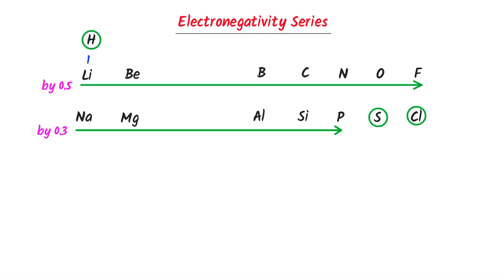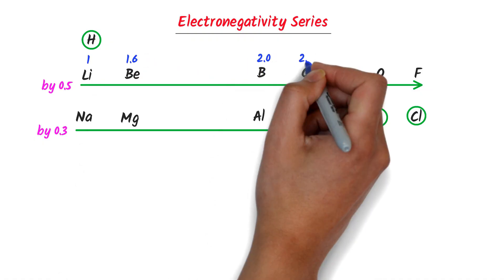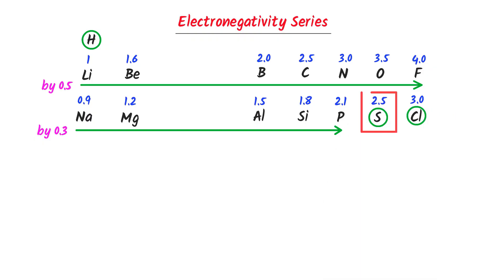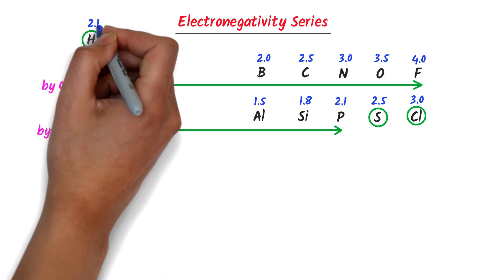So the second period values are: 1.6, 2.0, 2.5, 3.0, 3.5, and 4.0. For the third period, I write 0.9, then increase by 0.3: 1.2, 1.5, 1.8, 2.1. For the three circled elements, I write 3, then decrease by 0.5 to get 2.5, and decrease by 0.4 to get 2.1.